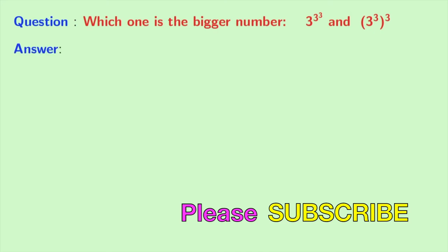Now, let's start. At first, we will simplify both the numbers and we have 3^(3^3) as our first number.